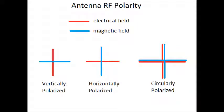The next thing I'm going to cover is the antenna RF polarity. The red is going to represent the electrical field and the blue is going to represent the magnetic field. On the left is vertically polarized, which means the electrical wave is vertical and the magnetic wave is horizontal. In the middle is horizontally polarized. The electrical field is now horizontal and the magnetic field is vertical.